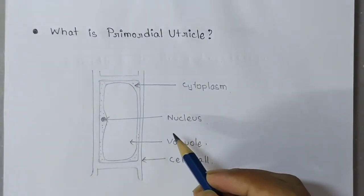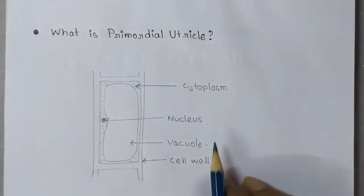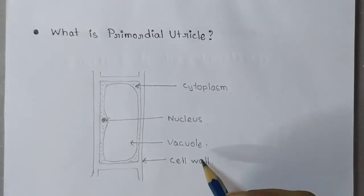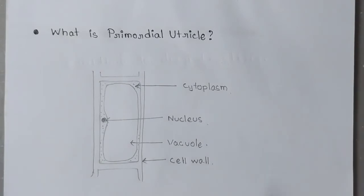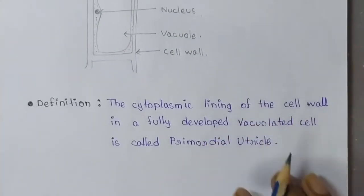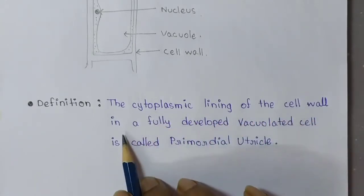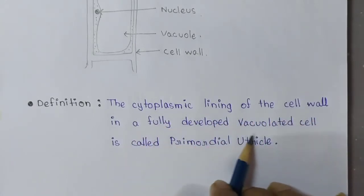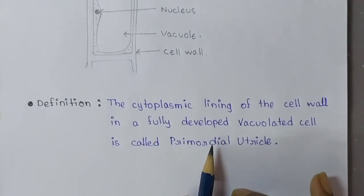We can see primordial utricle on plant cells only, not on animal cells — remember this. The definition is: the cytoplasmic lining of the cell wall in a fully developed vacuole cell is called primordial utricle.